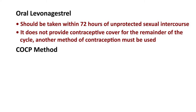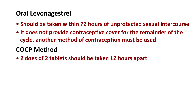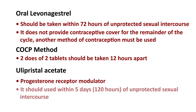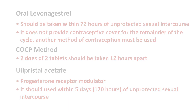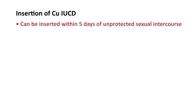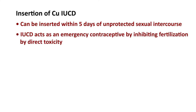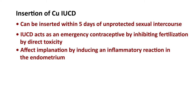For the combined oral contraceptive method of emergency contraception, two doses of two tablets of combined oral contraceptive pill should be taken 12 hours apart. Ulipristal acetate is a progesterone receptor modulator that should be used within five days of unprotected sexual intercourse. Copper IUCD acts as an emergency contraceptive by inhibiting fertilization through direct toxicity and affects implantation by inducing an inflammatory reaction in the endometrium. Copper content may also inhibit sperm transport.